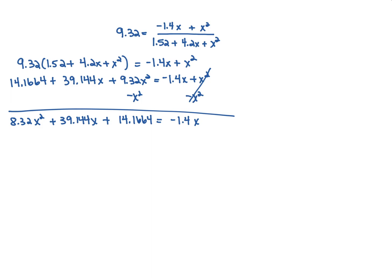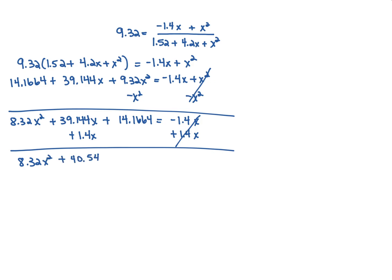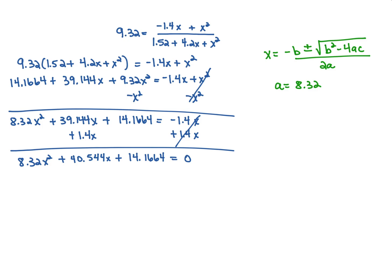We add 1.4X to both sides to get our equation set to zero. Now we can use the quadratic formula to solve for X. The quadratic formula is X = (−B ± √(B²−4AC)) / 2A. Our A is 8.32, our B is 40.544, and our C is 14.1664.